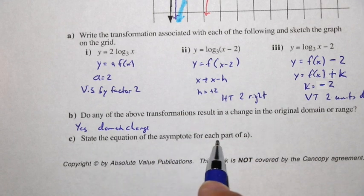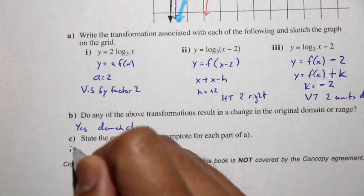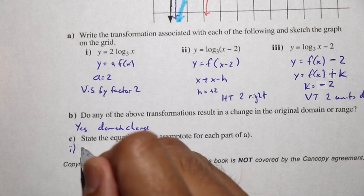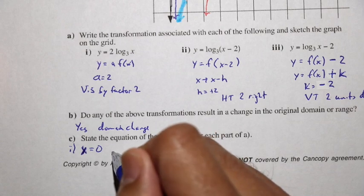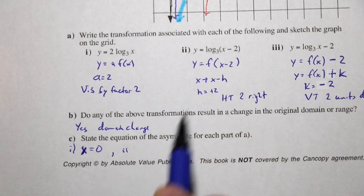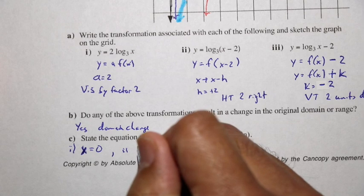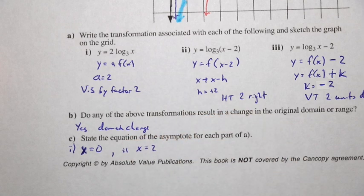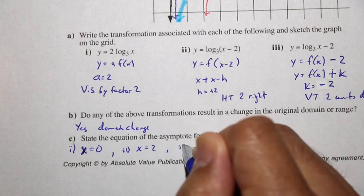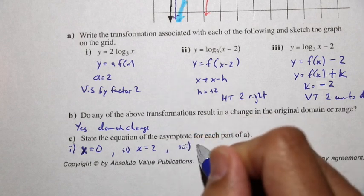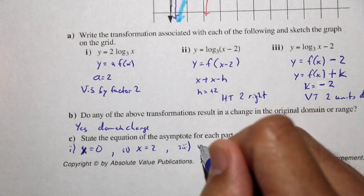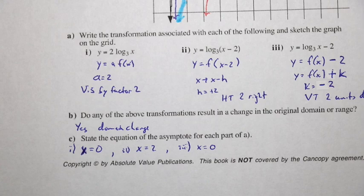Let's state the equation of the asymptote for each part. In part 1, the vertical asymptote is the y-axis, with equation x equals 0. In part 2, the graph was shifted 2 units to the right, so the asymptote moved from x equals 0 to x equals 2. In part 3, even though it shifted down 2 units, it still tends toward the y-axis, so the asymptote remains x equals 0.